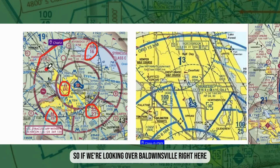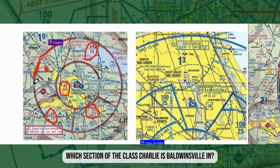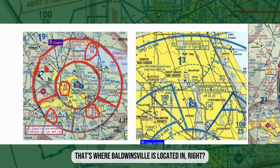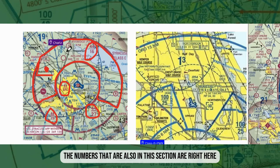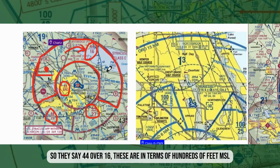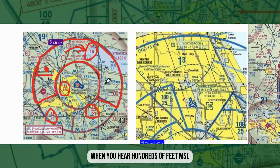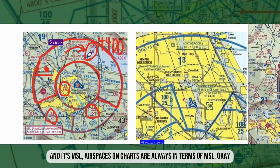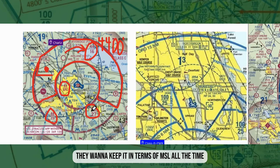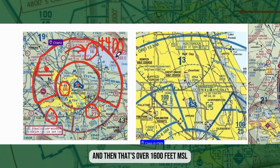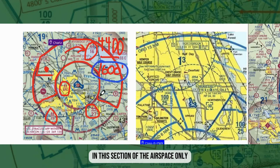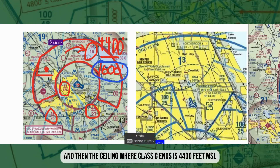If we're looking over Baldwinsonville, it will be in this section here. The numbers for this section say 44 over 16. These are in terms of hundreds of feet MSL — all you have to do is add two zeros. So 44 is 4,400 feet MSL and 16 is 1,600 feet MSL. Airspaces on charts are always in terms of MSL to keep a standard. So the floor — where the airspace starts — is 1,600 feet MSL, and the ceiling where Class C ends is 4,400 feet MSL in this section.